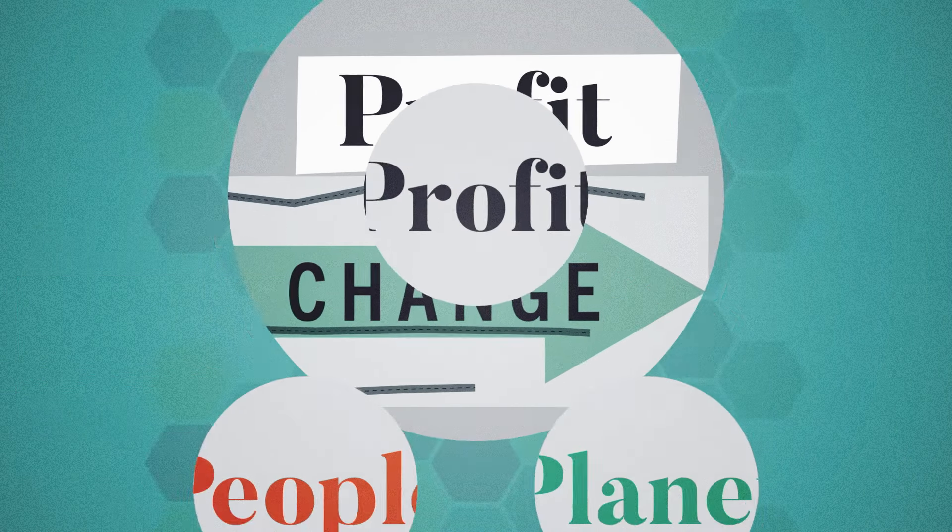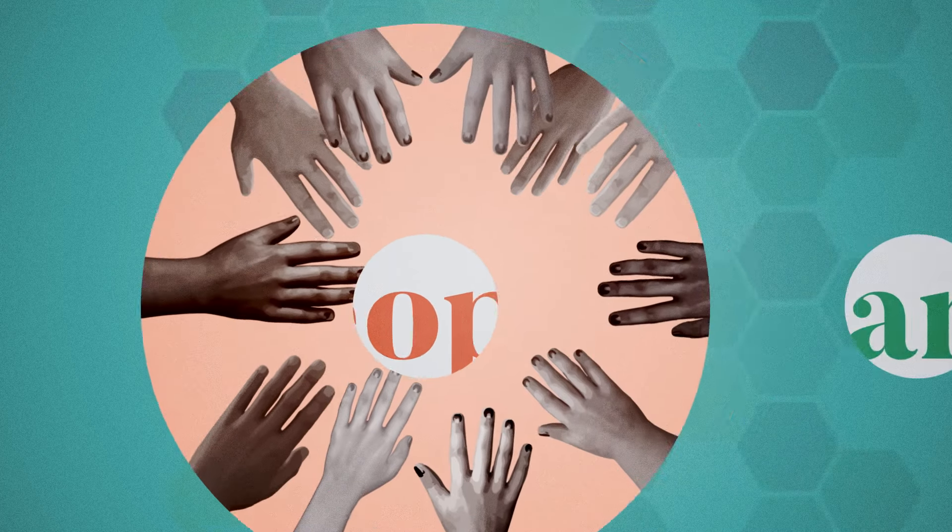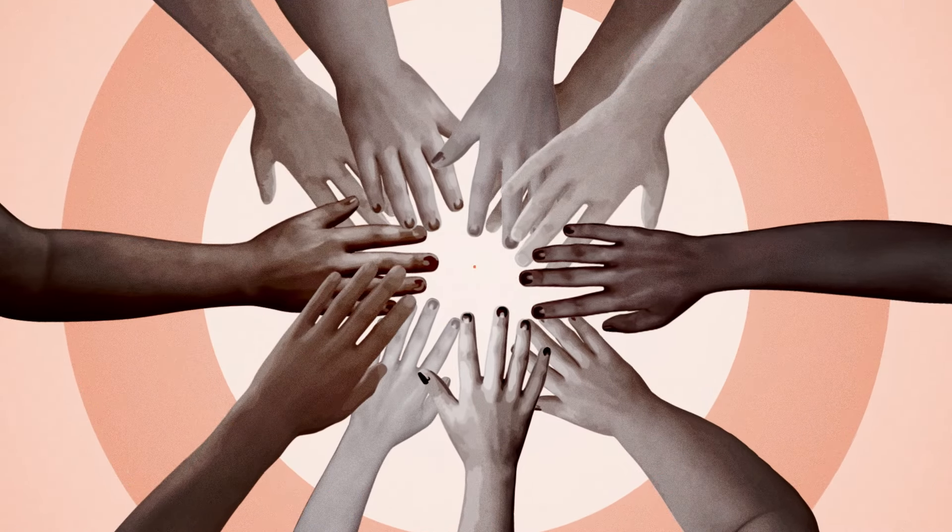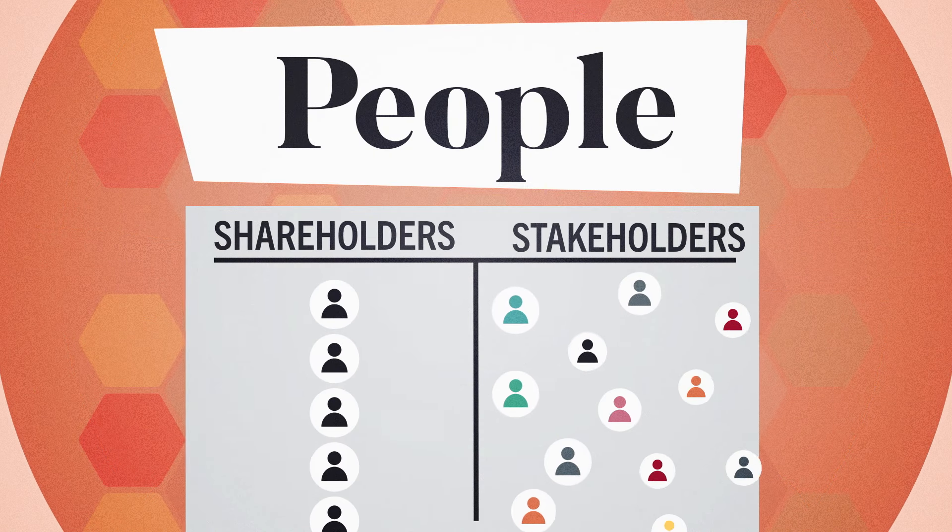The triple bottom line's second component highlights a business's societal impact or its commitment to people. It's important to distinguish between a firm's shareholders and stakeholders.